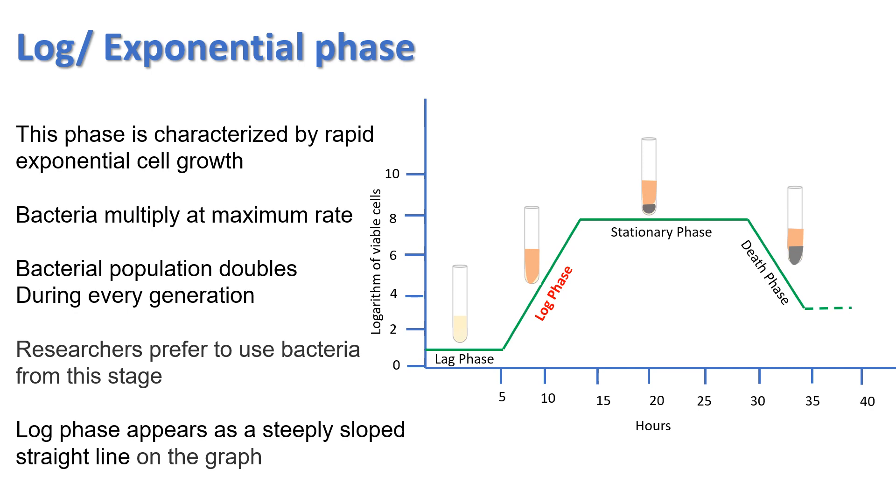Log phase: The log phase is also known as the exponential phase. This phase is characterized by rapid exponential cell growth, i.e., 1 to 2, 2 to 4, 4 to 8 cells, and so on. The bacterial population doubles during every generation. They multiply at their maximum rate. The log phase continues until there is a depletion of nutrients in the setup. This stage also comes to a stop if toxic substances start to accumulate, resulting in a slower growth rate. The cells are the healthiest at this stage. Researchers prefer to use bacteria from this stage for their experimental processes. When plotted on a logarithmic graph paper, the log phase appears as a steeply sloped straight line.